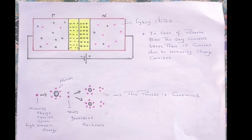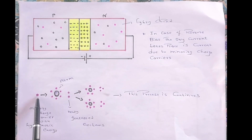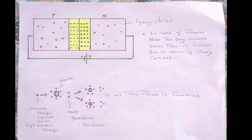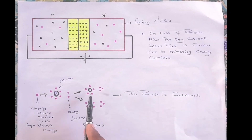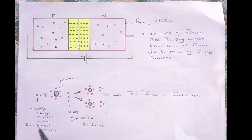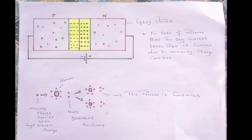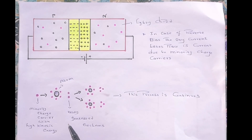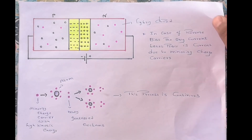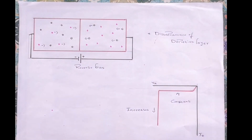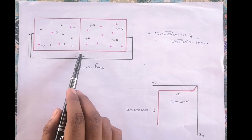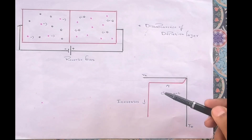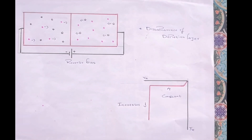Due to this maximum kinetic energy, free electrons collide with neighboring atoms at high speed, and a new electron-hole pair is generated. This newly generated free electron also gains kinetic energy and hits the next neighboring atom at high speed. This process is continuous. This continuous collision process is responsible for the increase in minority charge carriers in the depletion region, and as a result the depletion region disappears. Due to this disappearance of the depletion region, a huge reverse current starts flowing through the PN junction diode — hence the current increases. This is all about avalanche breakdown.